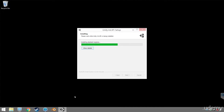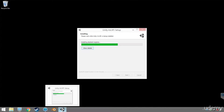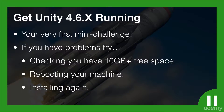So we just wait for the installation to finish. I've got a challenge for you — one of the things we do in this course is regularly stop you and give you a challenge. Your challenge is to get Unity 4.6 running. If you have problems, try checking that you have at least 10 gig of free space, then reboot your machine and install again. Pause the video, go get it done, try your very best, then come back and I'll show you how I did it.